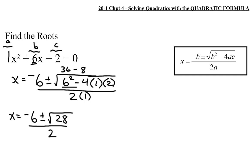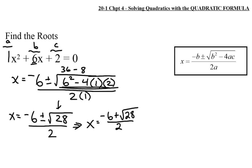From there, x equals negative 6 plus or minus the square root of 36 minus 8, which is the square root of 28, over 2. I like to get the radicand value first. The problem here is we don't have a perfect square — the square root of 28 doesn't simplify to a whole number. So this is going to have to be written as an exact value. Going back to grade 10, what can we do with the square root of 28?